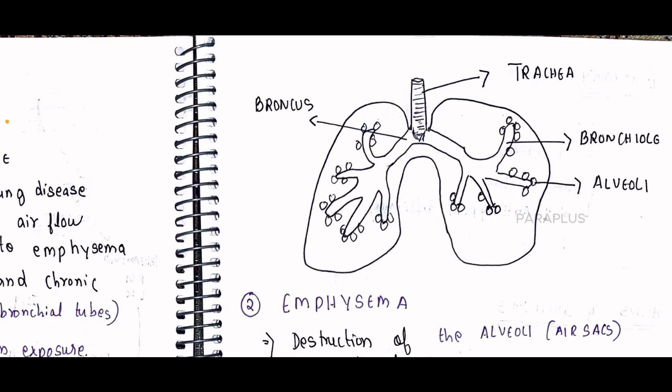Now in COPD, there is a problem in the branches — an obstruction. There is also a dysfunction at the level of the alveolar sac.